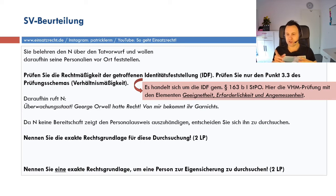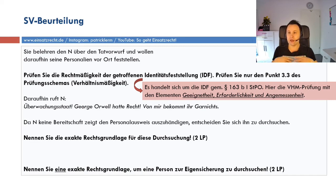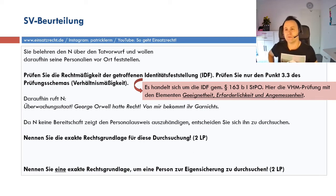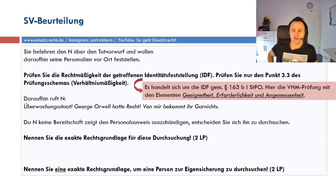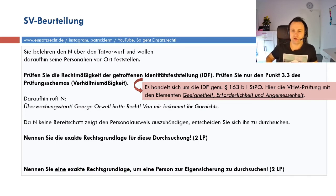Ich bringe einen einleitenden Obersatz und sage: Die Maßnahme §163b Abs. 1 muss verhältnismäßig sein. Die Verhältnismäßigkeit ergibt sich bei repressiven Maßnahmen aus dem Verhältnismäßigkeitsgrundsatz Art. 20 Abs. 3. Bei präventiven Maßnahmen kann man §15 BPolG zitieren. Dann arbeitet man die drei Elemente im Dreierschritt ab: Definition, Subsumption, Ergebnis – und das bei Geeignetheit, Erforderlichkeit und Angemessenheit.